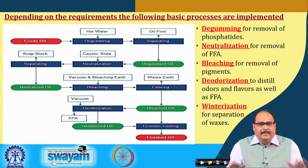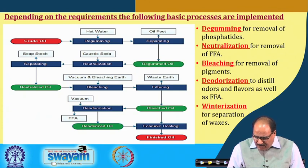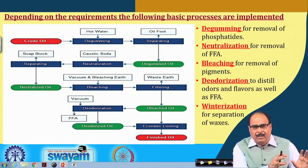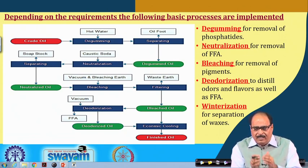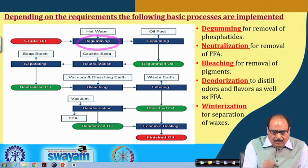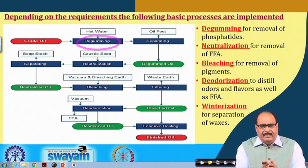In this slide I have tried to show you the major processes to which crude oil is subjected in refining. As I mentioned, removal of phosphatides is called degumming. The crude oil passes through the degumming process first, and we will see all these processes in detail a little later.